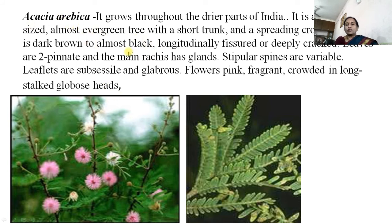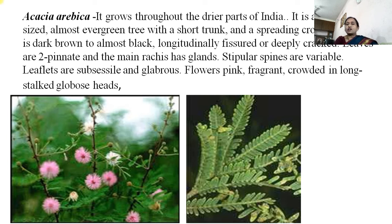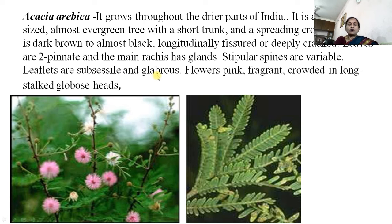Acacia arabica (Subabul): it grows throughout the drier parts of the country. It is a moderate-sized, almost evergreen tree with a short trunk and splendid crown of branches. The bark is dark brown and almost black, longitudinally fissured or deeply cracked. The leaves are bipinnate and the main rachis has glands. Stipular spines are variable; leaflets are subsessile and glabrous. Flowers are pink, fragrant, crowded in long-stalked globose heads.